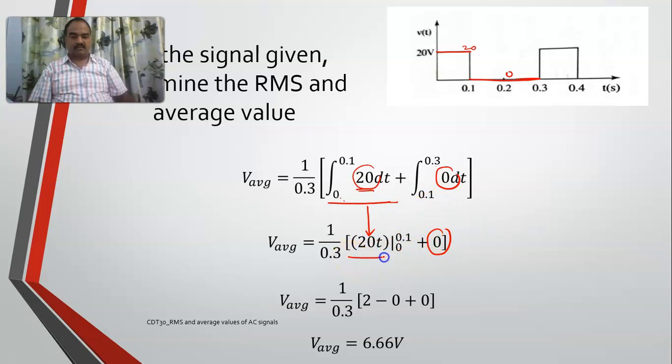Now for this 20t, if I substitute first of all 0.1, I will get 20 into 0.1, it is 2. And 20 into 0 is 0. So this is 2 by 0.3, its value is 6.66 volts.